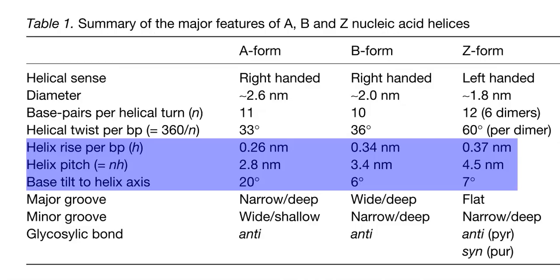Finally, we look at a summary of the major differentiating features between the three forms of DNA: A-DNA, B-DNA, and Z-DNA. Regarding helical sense, A form and B form are right-handed helices, whereas the Z form is a left-handed helix. The diameter of A-DNA is 2.6 nanometers, B-DNA is 2 nanometers, and Z-DNA is 1.8 nanometers.